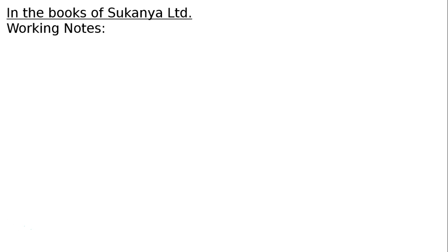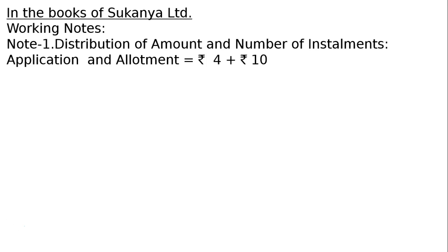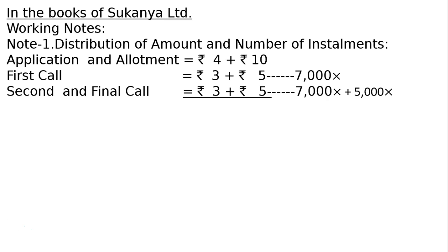In the books of Sukanya Ltd. Working Note 1: Distribution of amount and number of instruments. On application and allotment: ₹4 for capital and ₹10 for securities premium reserve. On first call: ₹3 for capital and ₹5 for securities premium. On second and final call: ₹3 for capital and ₹5 for securities premium.